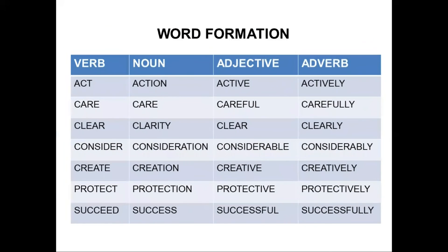Word formation: by adding '-ion' or '-ity' at the end of a base word, it forms a noun. By adding '-ive,' '-ful,' or '-able,' it creates an adjective. Adding '-ly' creates an adverb. For example, with 'success': adding '-ful' creates 'successful' (adjective); adding '-ly' creates 'successfully' (adverb); adding '-ed' creates the past tense verb form.